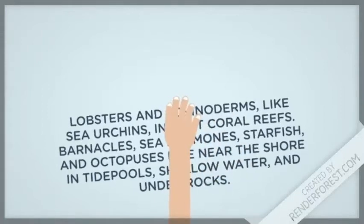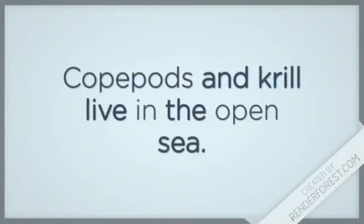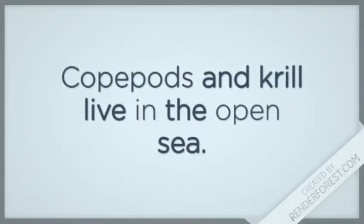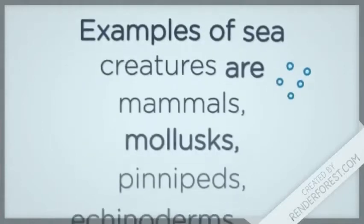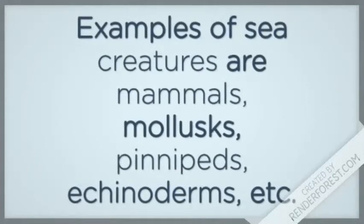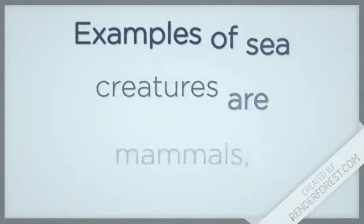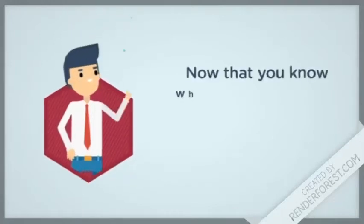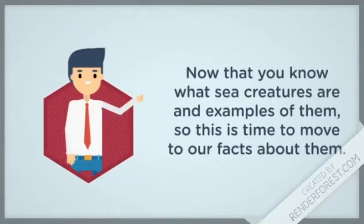Lobsters and echinoderms inhabit coral reefs. Barnacles, starfish, and octopuses live near the shore in tide pools, shallow water, and under rocks. Copepods and krill live in the open sea. Examples of sea creatures include mammals, mollusks, pinnipeds, echinoderms, and more. Now that you know what sea creatures are, it's time to move into our facts about them.